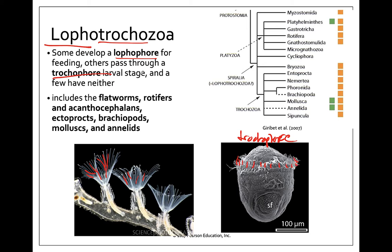Lophotrochozoa includes several different groups: the flatworms, which are the platyhelminthes; the rotifers and acanthocephalins, which are closely related to each other; the ectoprocts and brachiopods, which both have lophophore feeding structures; molluscs, which do have a trochophore larva; as well as annelids, the segmented worms.